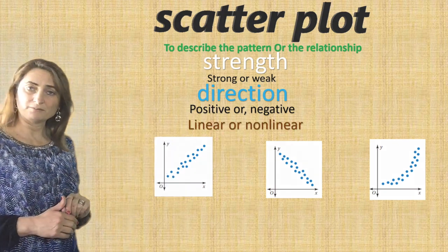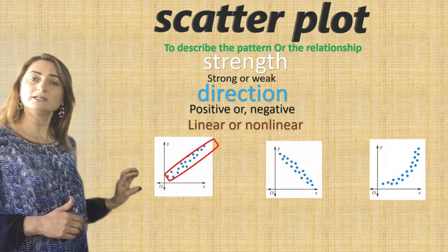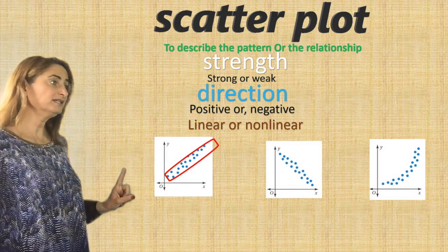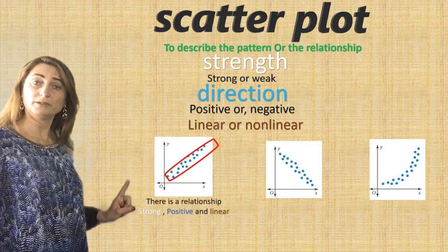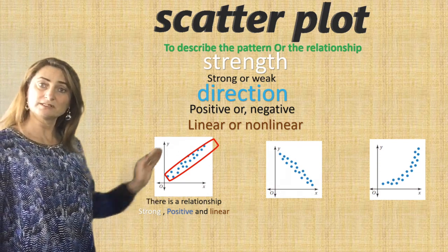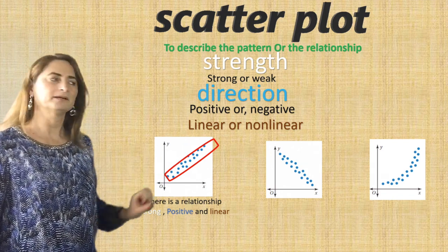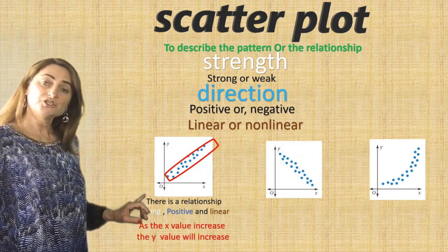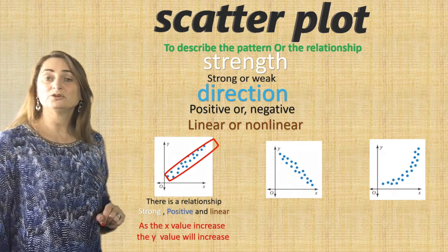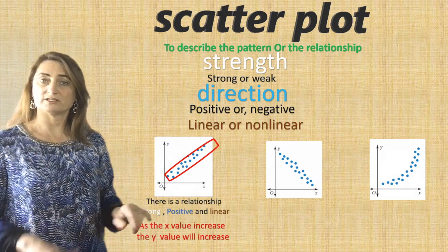Let's discuss the first example. I can see a trend from left to right where all these dots are going up like ants going uphill. So there is a relationship. It's strong because all these dots are close to each other. It's positive because it's going up from left to right. And it's linear because it makes a thick line. The relationship would be: as x increases, the y value will increase too — they both increase or they both decrease.